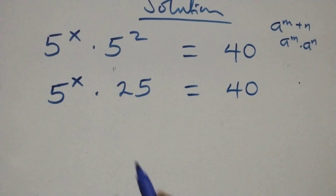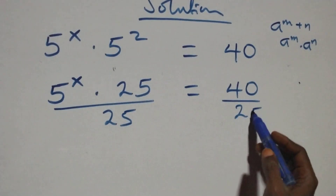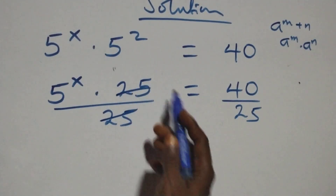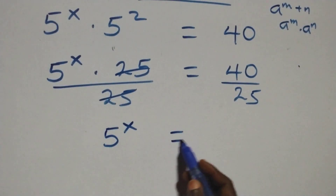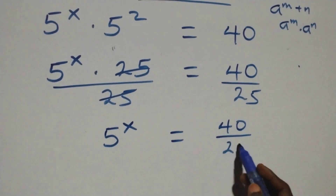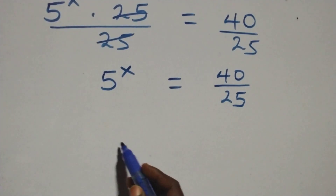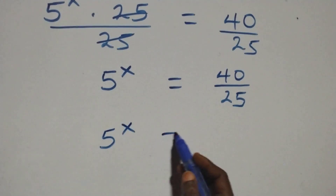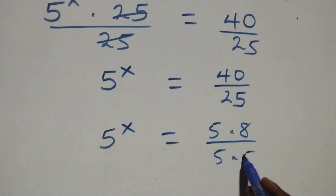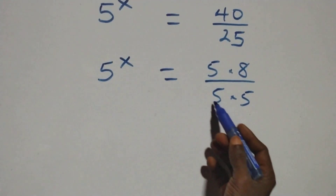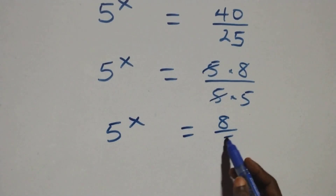The next step: we divide both sides by 25. Dividing both sides by 25, the 25s cancel each other. We have 5 raised to power x equals 40 over 25. This simplifies — 40 over 25 is the same as 5 times 8 over 5 times 5, so the 5s cancel, and we have 5 raised to power x equals 8 over 5.